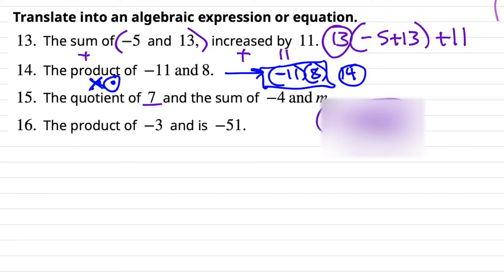Number 15: "the quotient of 7 and the sum of negative 4 and m." The sum of negative 4 and m is negative 4 plus m. The quotient of 7 and that means we divide: 7 over (negative 4 plus m).